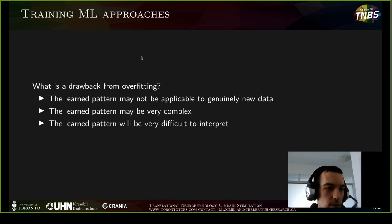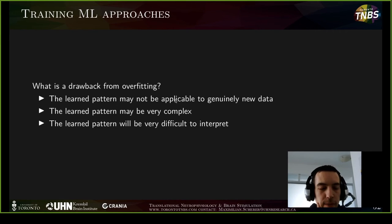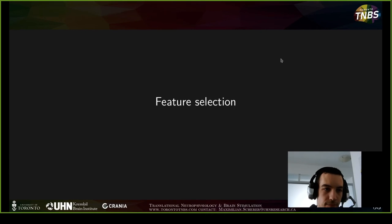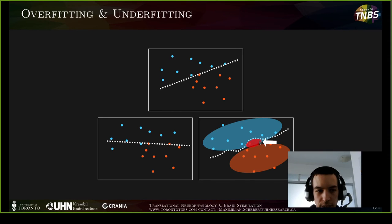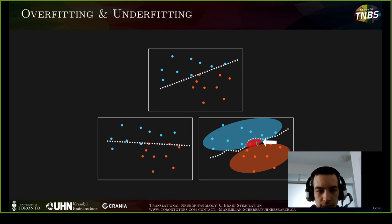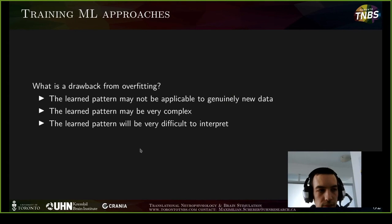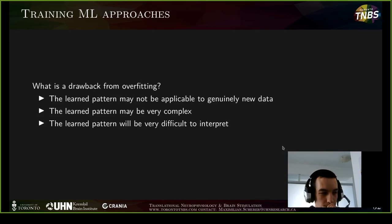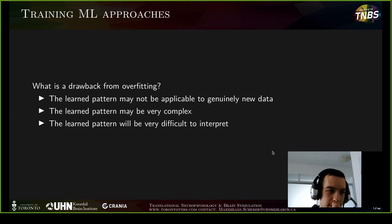The drawbacks of overfitting: your model may not be applicable to genuinely new data, because it learned something incorrect from outliers. Overfitting produces really complex patterns and shapes that essentially snake through the data. You also need to be very careful about interpreting feature selection and separation lines from an overfitted classifier — that's a topic to cover shortly.